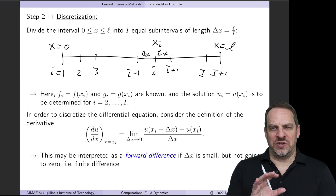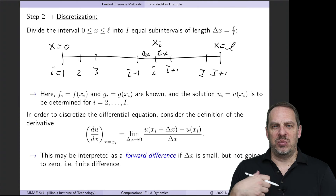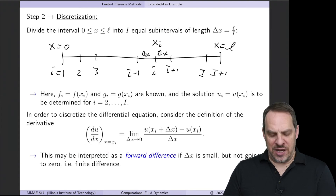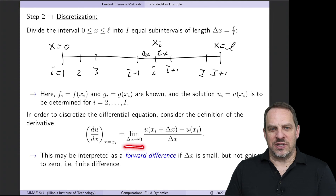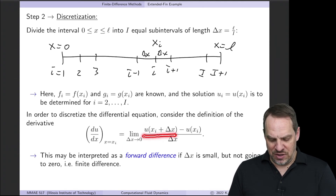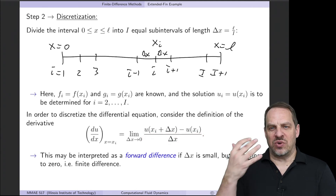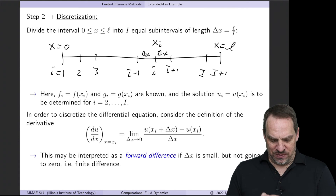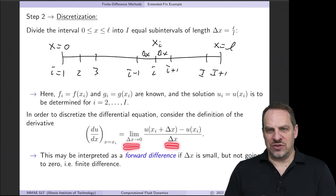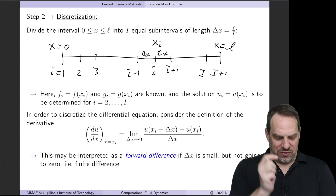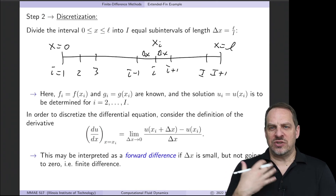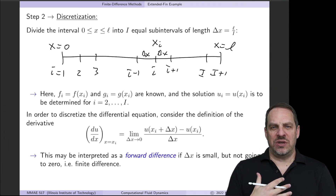I'll go through the formal derivation of finite difference approximations using Taylor series in the next video, but for now I want to introduce these intuitively. Going back to the definition of the derivative from Calculus 1: du/dx at point x sub i is the limit as delta x goes to zero of [U(x_i + delta x) - U(x_i)] / delta x — rise over run. In the limit as delta x goes to zero, you get the exact value of the first derivative, i.e., the slope of the function.